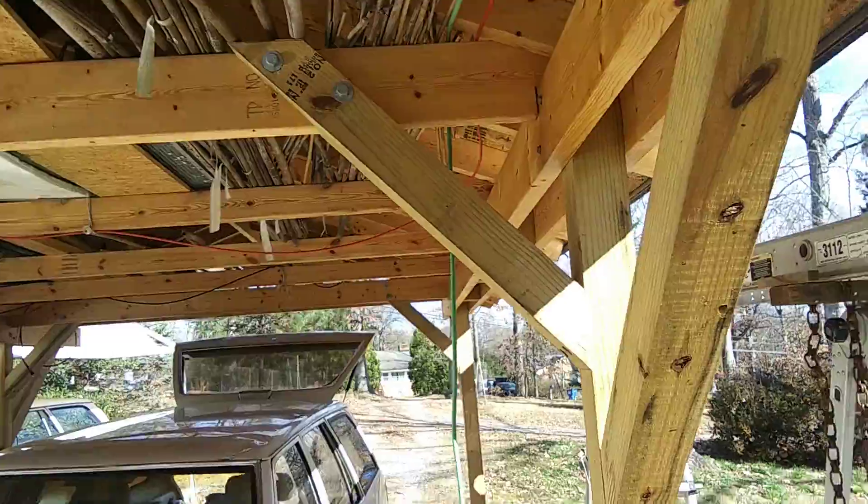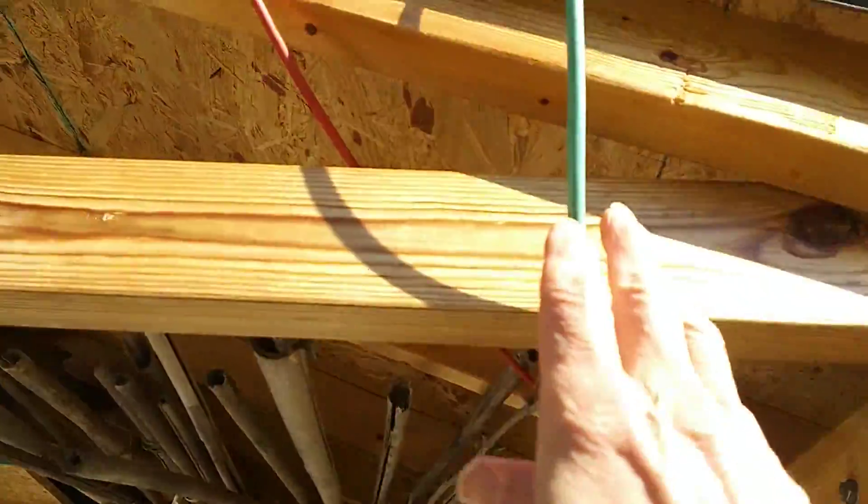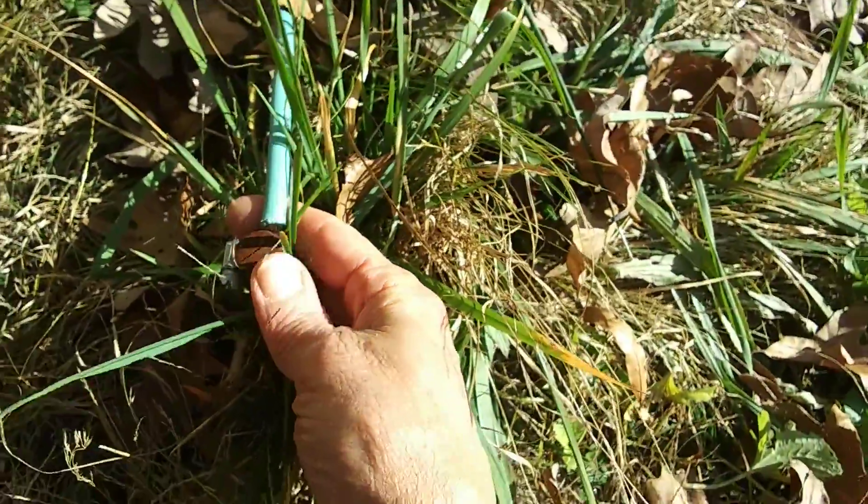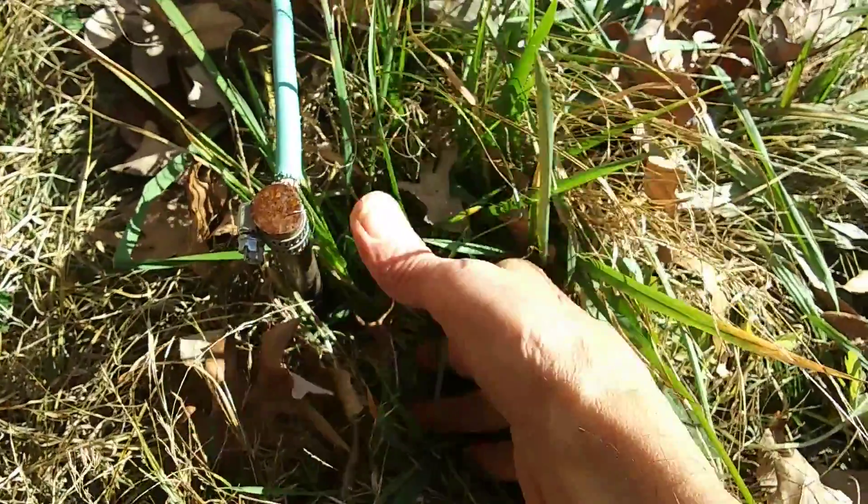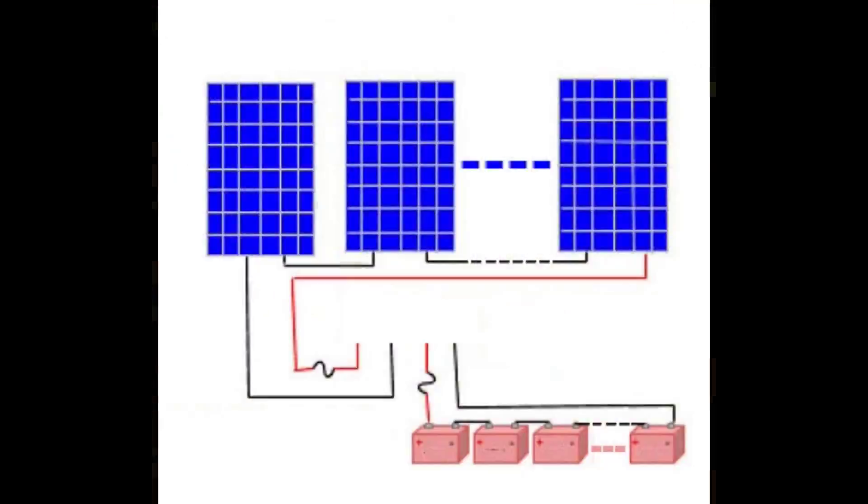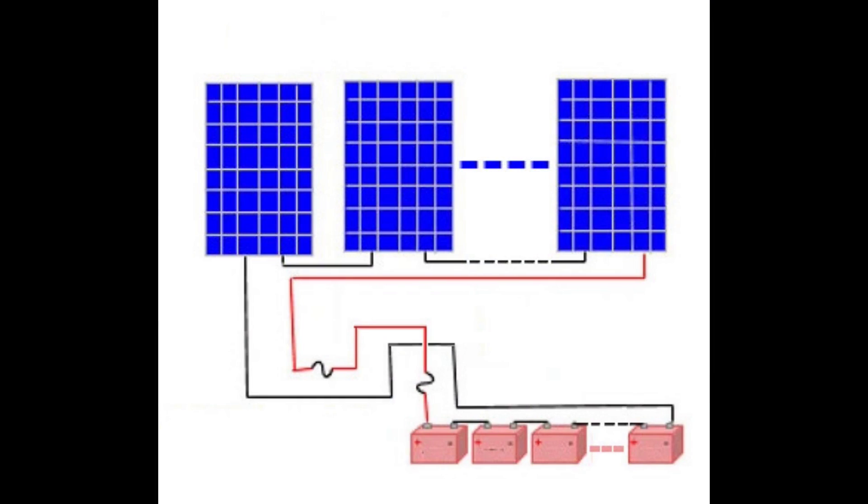So now I've got my array mounted and wired, with the frame grounded through an 8 foot copper stake as a lightning arrestor. In principle I could just connect it directly to the battery pack. The voltage on the array would drop to the battery voltage, about 120 volts, and I'd be charging it very close to maximum efficiency. But there's still a problem.